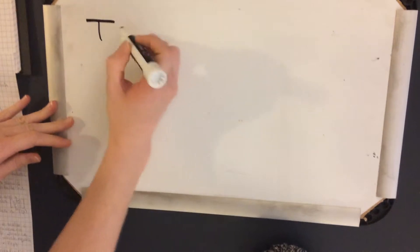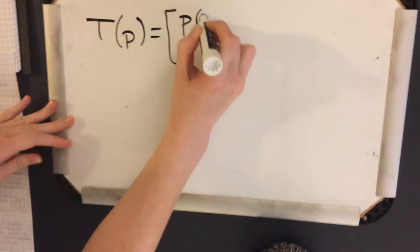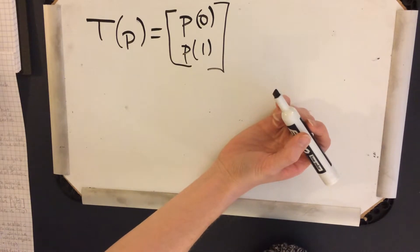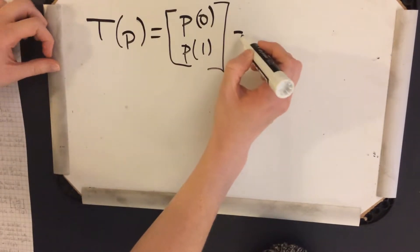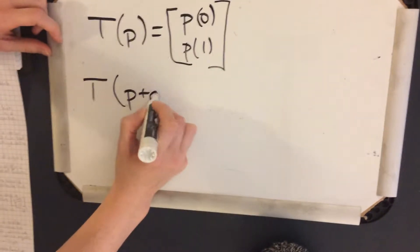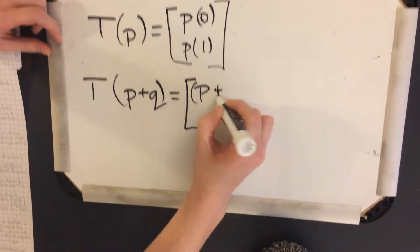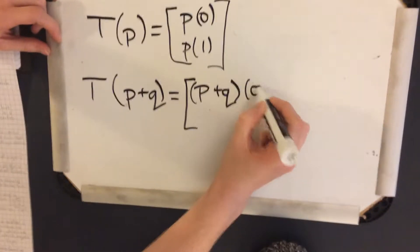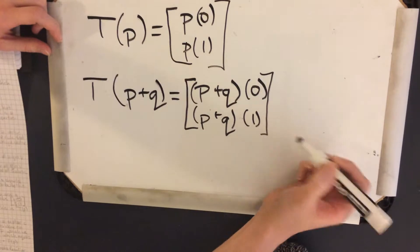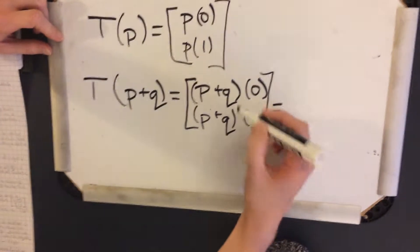So given T(p) equals p(0), p(1), we should be able to say that T(p+q) equals (p+q)(0) and (p+q)(1). So we can break this part further by distributing the 0 and this 1.